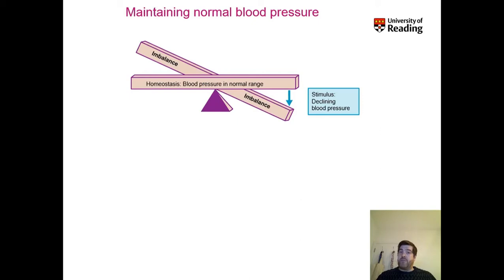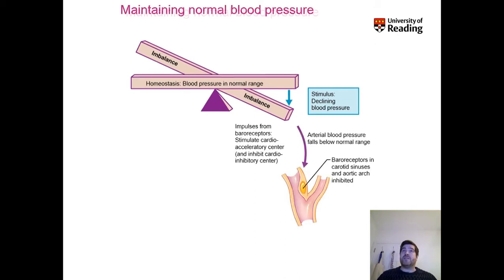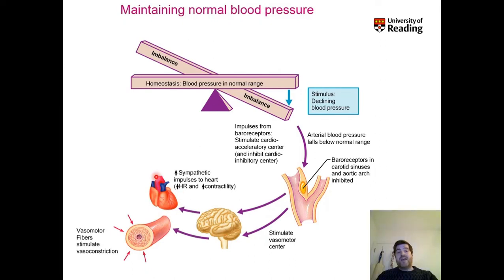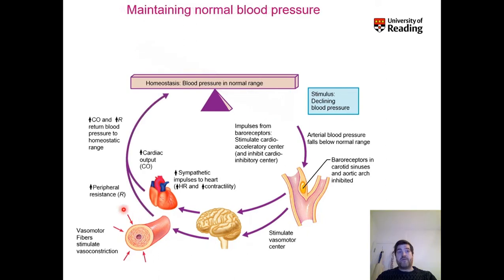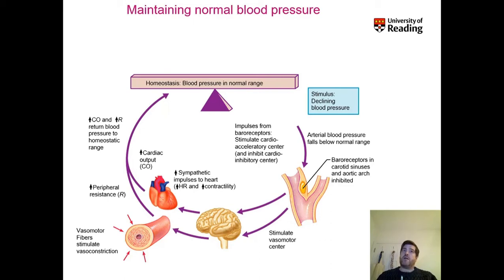Similarly, if there is a decrease in blood pressure, the baroreceptor reflex can also adjust for that. The process is exactly the same but in the opposite direction. The decrease in pressure is sensed by the baroreceptors, which this time instruct the sympathetic areas in the brain to increase sympathetic drive to the arteries and to the heart, increasing total peripheral resistance and cardiac output, thereby raising blood pressure back to the normal range.